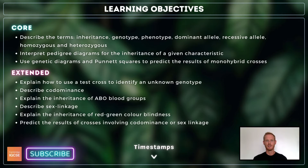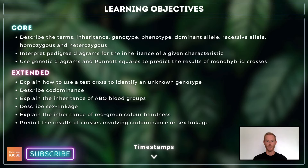For extended, you also need to explain how to use a test cross to identify an unknown genotype, describe codominance with reference to the inheritance of ABO blood groups, and describe sex linkage with reference to colour blindness. There's a lot of information here and I'll move quite quickly, so make sure you pause the video and study the diagrams as you go.